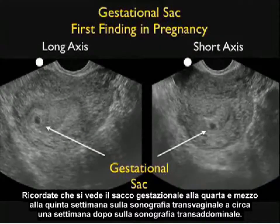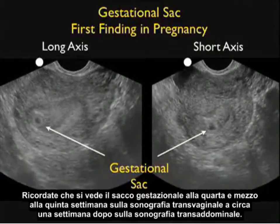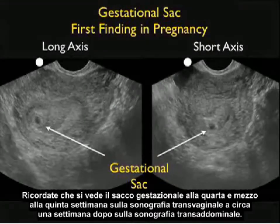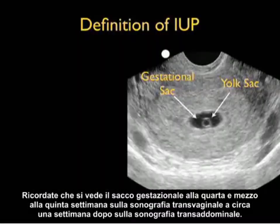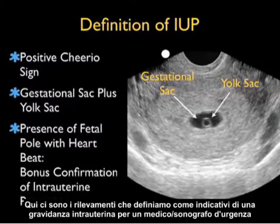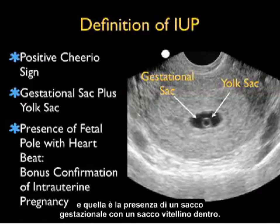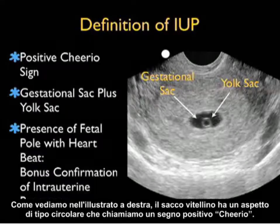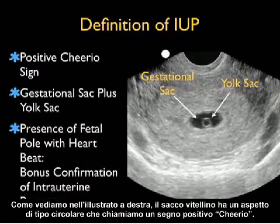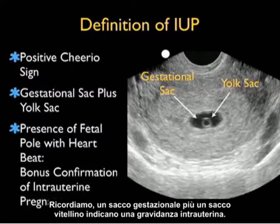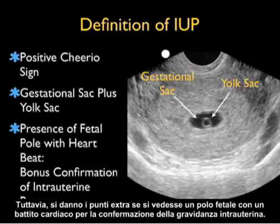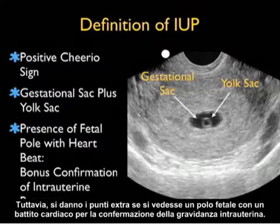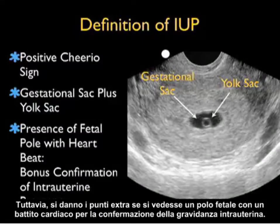The gestational sac is seen at about 4.5 to 5 weeks on transvaginal sonography and about a week later on transabdominal sonography. The findings we define as indicative of an intrauterine pregnancy are a gestational sac with a yolk sac inside — the yolk sac has a circular appearance we call the positive cheerio sign. Gestational sac plus yolk sac is indicative of intrauterine pregnancy, with bonus points if you also see a fetal pole with a heartbeat.